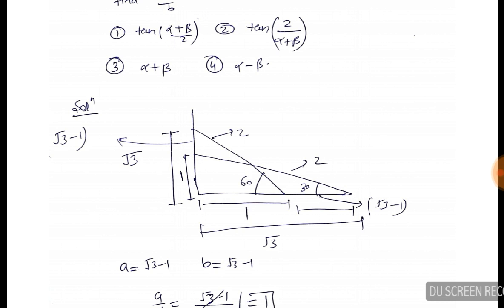Now look at the first triangle. If the angle is 60 degrees, think of the sides: the base is 1, the hypotenuse is 2, and the perpendicular is root 3. This is the ladder — the CD. The length of CD: cos 30 is root 3 by 2, so if hypotenuse is 2 then the adjacent side is root 3. And sin 30 is 1 by 2, so the perpendicular is 1.